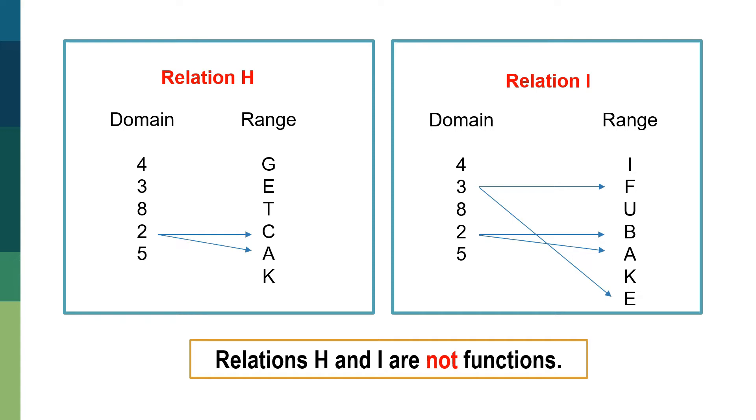Let us first observe relation H. As you can see, one of its domain, which is 2, is paired with letter C and letter A. So meaning to say, it doesn't pass the definition of a function, which is, the element of the domain should only be paired to only one element of the range. Therefore, this one is not a function.